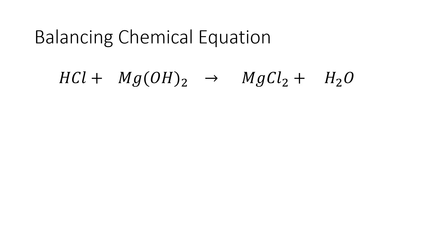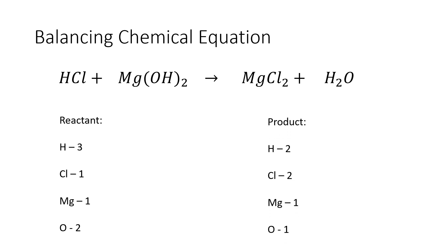Let us now balance the chemical reaction between hydrochloric acid and magnesium hydroxide that produces magnesium chloride and water. So these are the number of elements in the reactant side, and these are the number of elements in the product side. As you can see here, there are three elements that are not balanced: the hydrogen, the chlorine, as well as the oxygen.